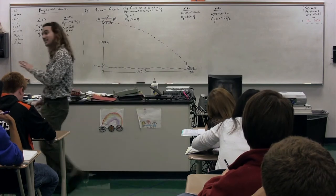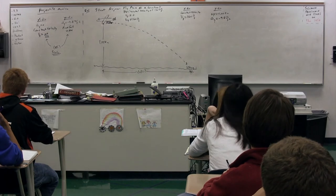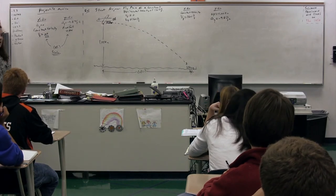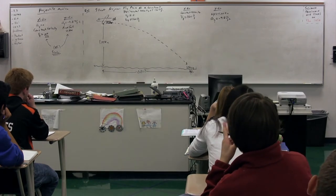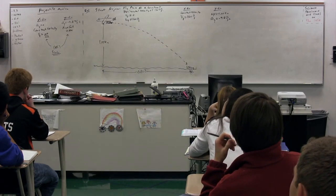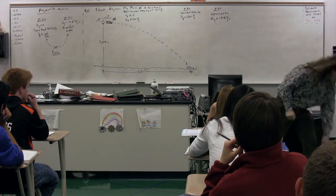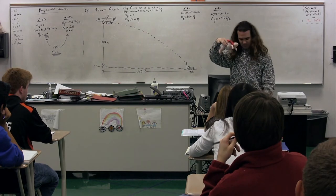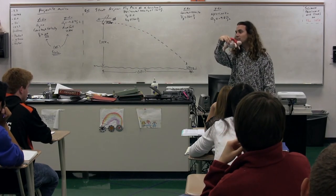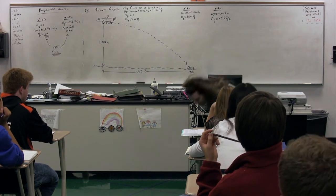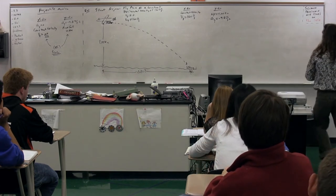The initial velocity in the x-direction is 160 meters per second. Arjun is flying in this direction and he's going to be dropped like so. Notice, at that moment when he's dropped, is he moving up or down? No. So his initial velocity in the y-direction is equal to zero.